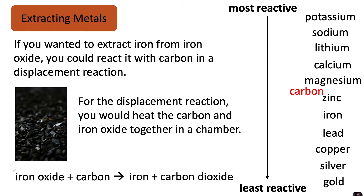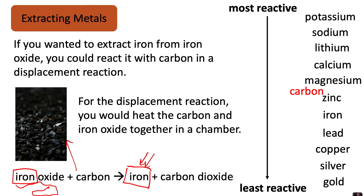You can see here that the iron that was stuck to the iron oxide in a rock-like compound, when heated with carbon — this black substance here — you can extract the metal. So now you have iron on its own, which you can use for things such as building tools and bridges, and then you have carbon dioxide as your by-product.